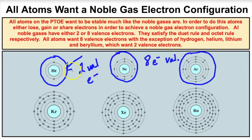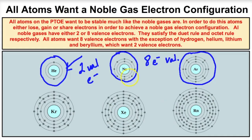Helium has two valence electrons, and that's why virtually every chemical reaction takes place — every atom is trying to satisfy the duet rule or the octet rule. Atoms like hydrogen, lithium, and beryllium want two valence electrons (duet rule), while all other atoms want eight valence electrons (octet rule), similar to the noble gases.